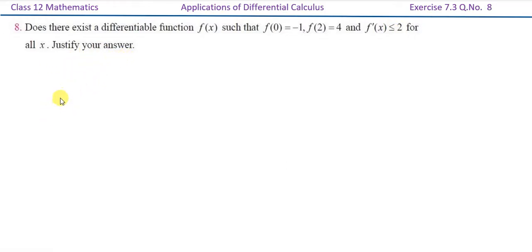We will actually apply the mean value theorem. f of c is equal to f of b minus f of a, that is f of 2 minus f of 0, the whole divided by 2 minus 0.